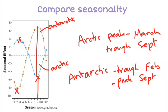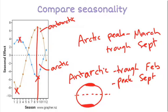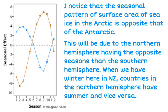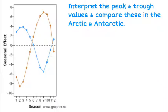If we think about why that is — from the map of the world, the Antarctic is at the bottom and the Arctic is at the top. Thinking about north versus south, when we're in winter they're in summer and vice versa. So I noticed that the pattern in the Arctic is opposite that of the Antarctic, and that will be because of the different seasons in the southern versus the northern hemisphere. I will then go on to interpret the actual peak and trough values, having already done the Antarctic ones previously, and then add the Arctic's values and compare that difference.